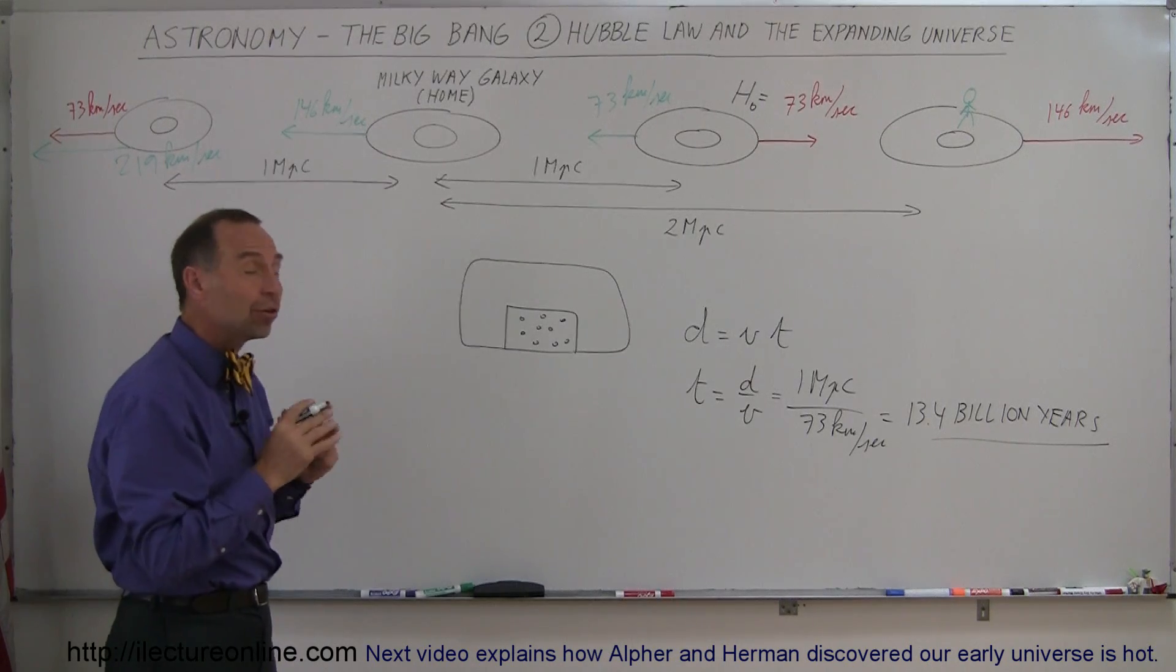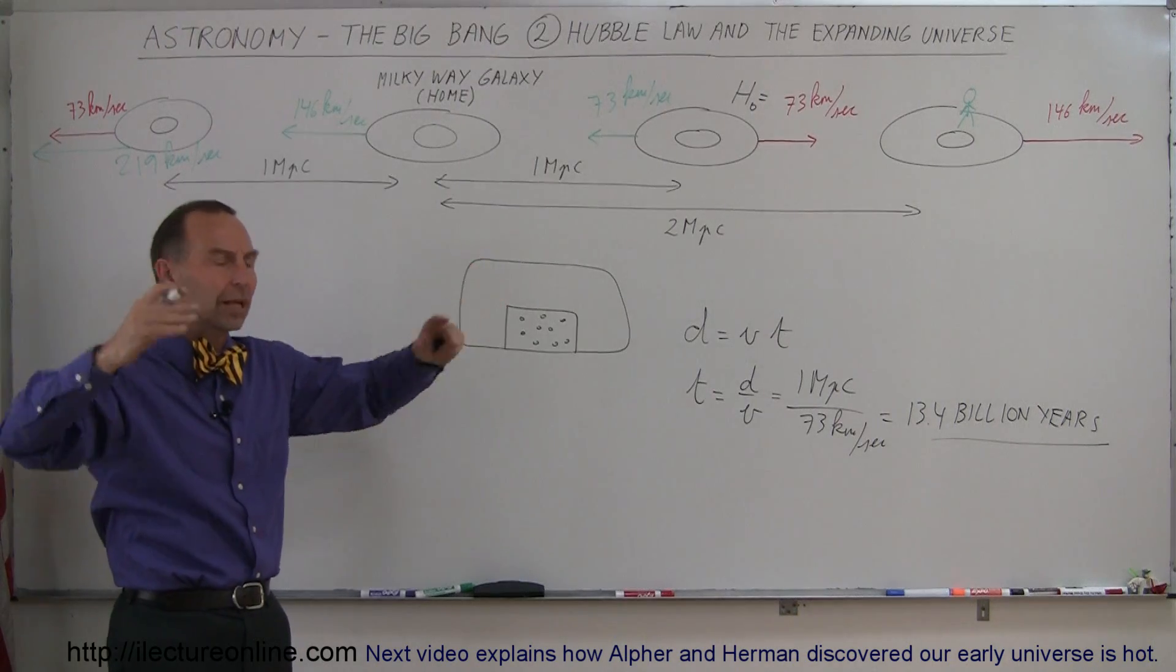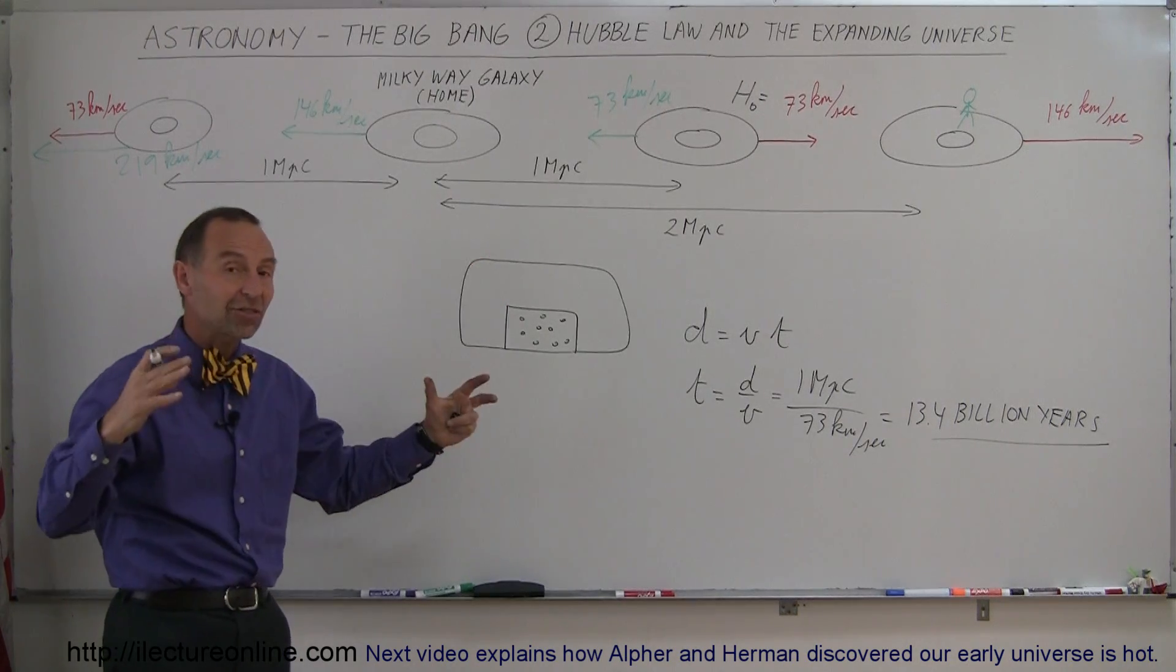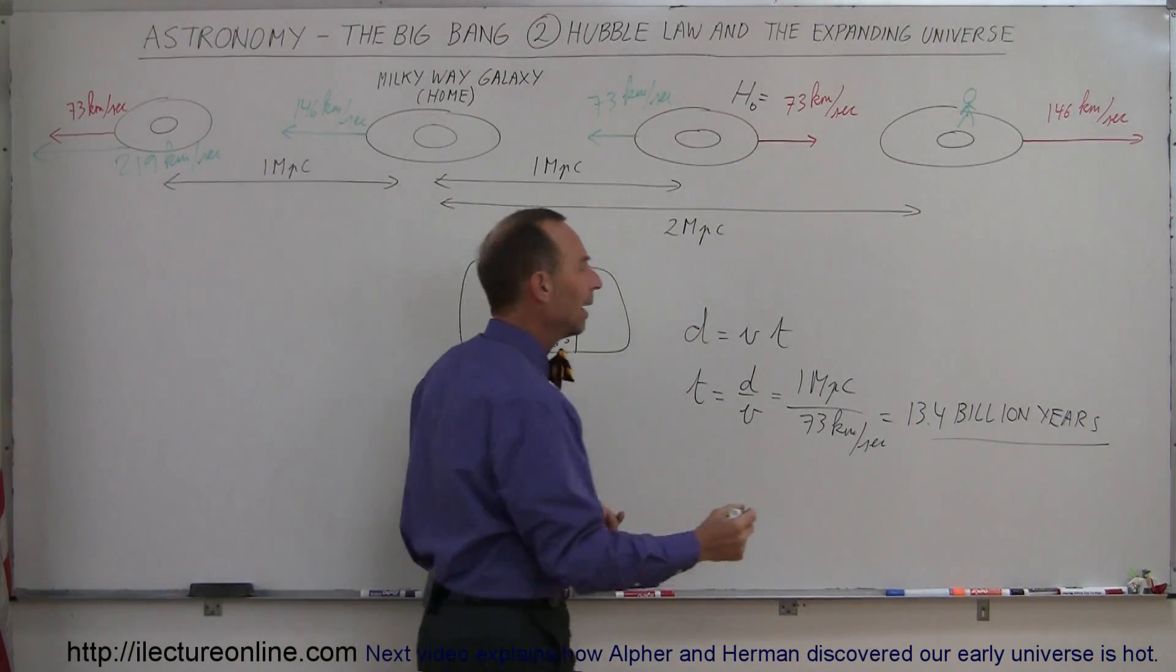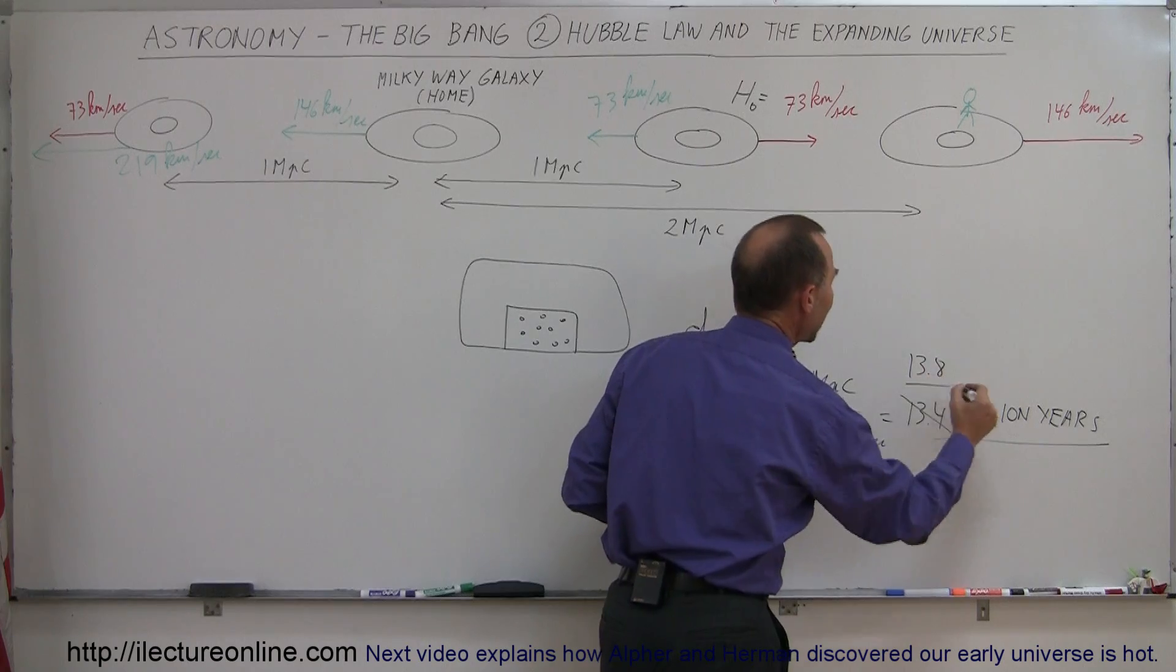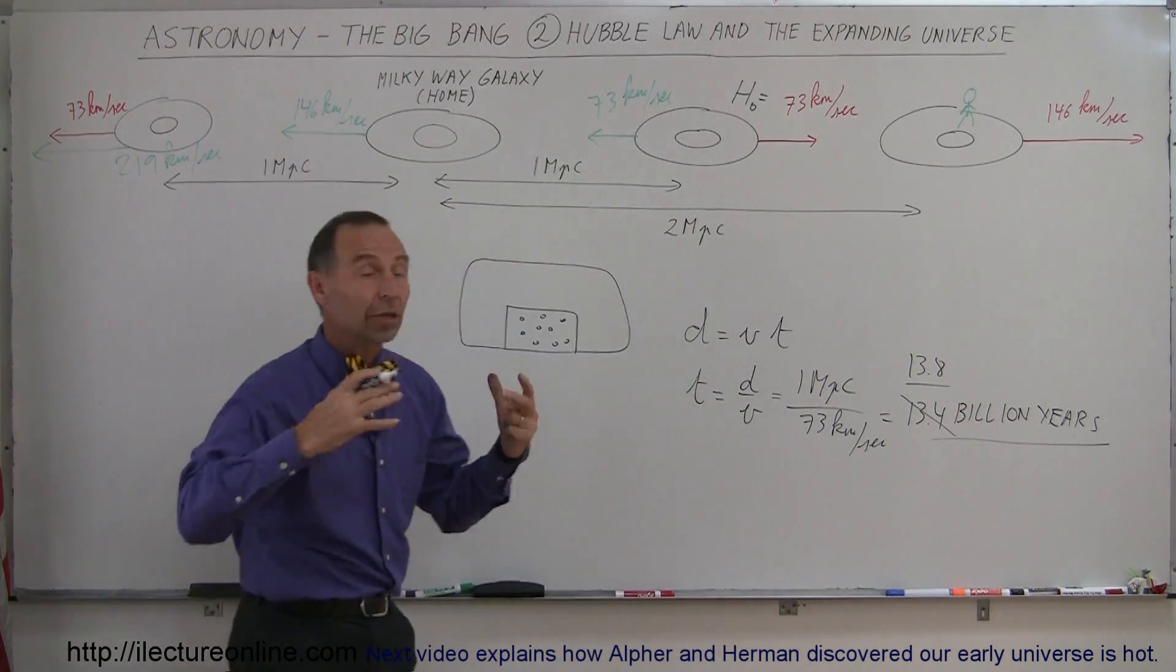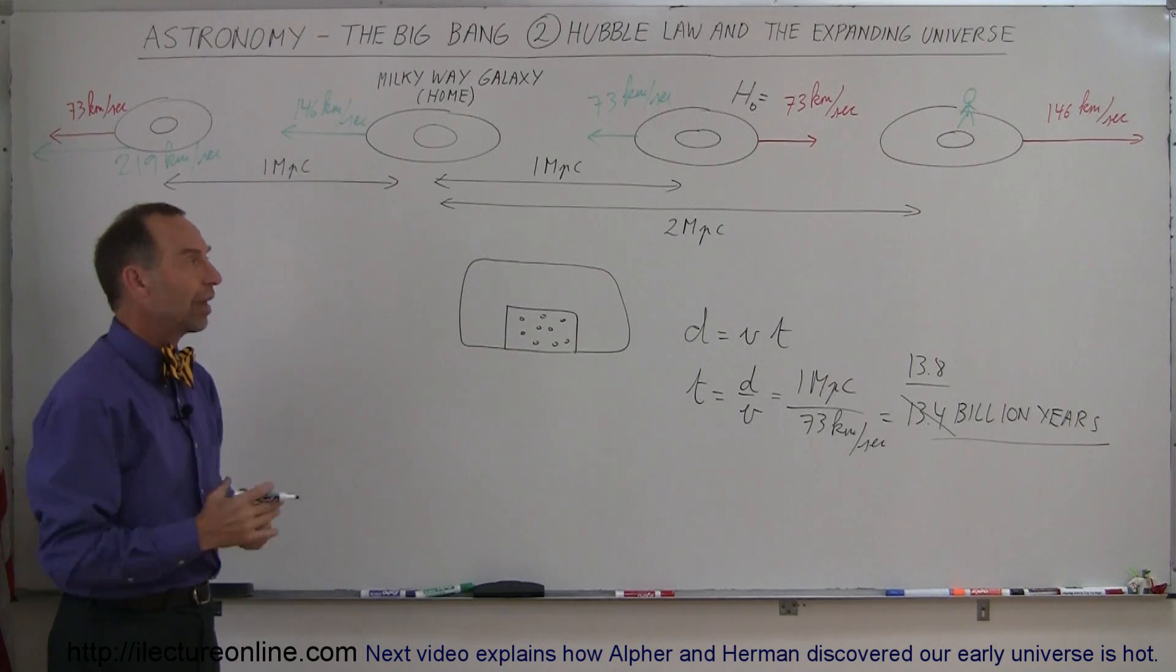But then in the late 1990s, they discovered that actually the expansion of the universe is accelerating, so that the current speed is faster than it must have been in the past. And so they made some adjustments for that, and so now they say that the age of the universe is about 13.8 billion years, because we have to account for the fact that the expansion of the universe is actually accelerating.